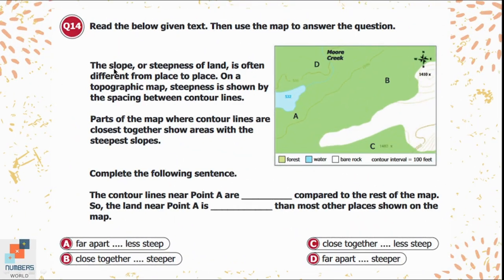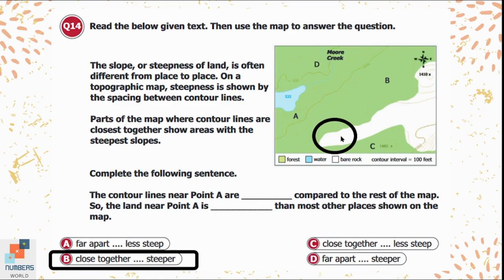Question 14: On a topographic map, the steepness of land is shown by the spacing between contour lines — areas where contour lines are closest together show the steepest slopes. Complete the sentence: the contour lines near point A are [blank] compared to the rest of the map, so the land near point A is [blank] than most other places. Looking at the map, the contour lines near point A are closest together and therefore steeper — the land near point A is steeper than most other places shown on the map.